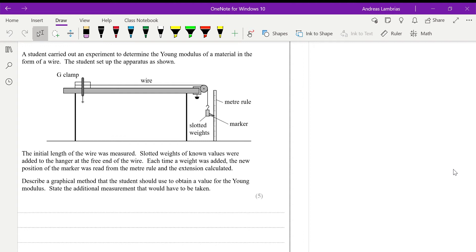It's giving us some information. It's asking us to describe a graphical method that the student can do to obtain the value for the Young modulus. Now, from the question, we get some information. It says that the initial length of the wire is measured. So, initial length, that would be X or X0.